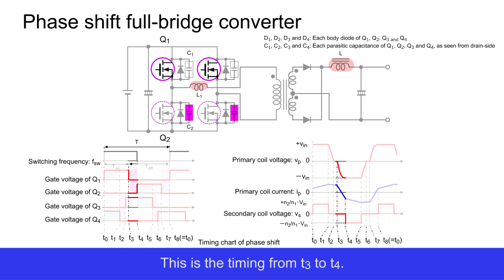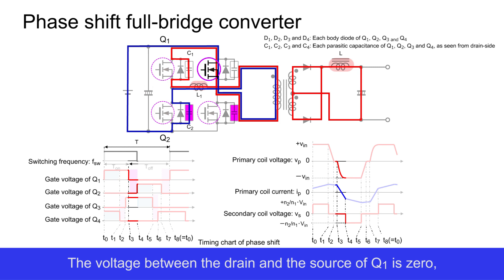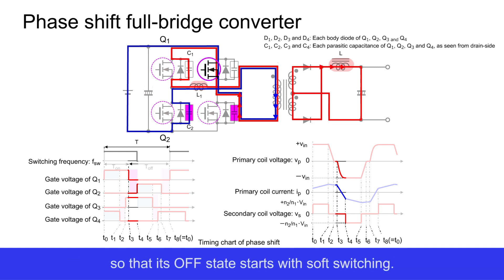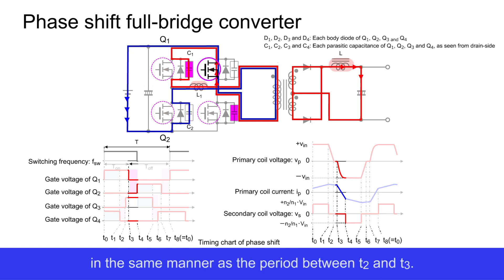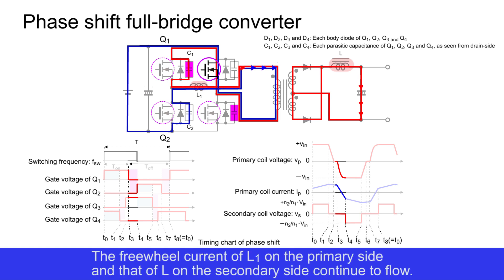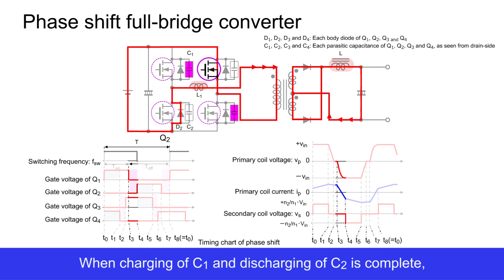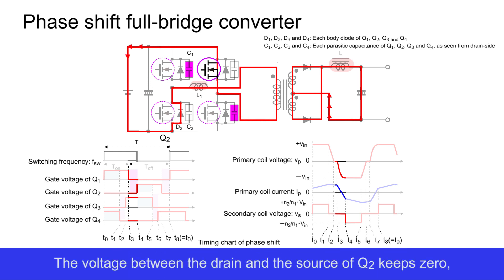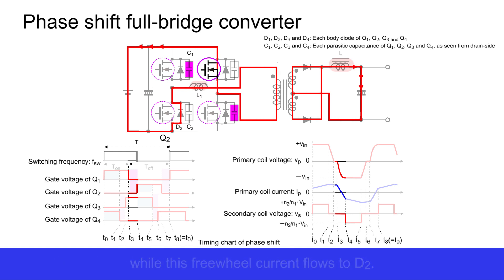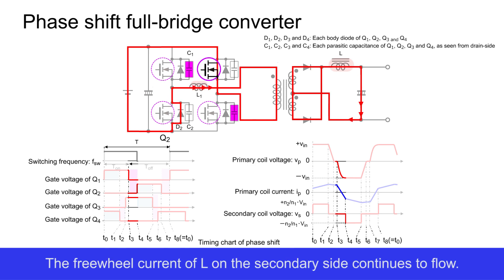This is the timing from T3 to T4. Q1 is turned off. The voltage between the drain and source of Q1 is zero, so its off state starts with soft switching. Parasitic capacitance C1 of Q1 is charged and parasitic capacitance C2 of Q2 is discharged in the same manner as the period between T2 and T3. The freewheel current of L1 on the primary side and that of L on the secondary side continue to flow. When charging of C1 and discharging of C2 is completed, current still flows via the body diode D2 of Q2 since energy is still accumulated in L1. The voltage between the drain and source of Q2 keeps zero while this freewheel current flows to D2. The freewheel current of L on the secondary side continues to flow.